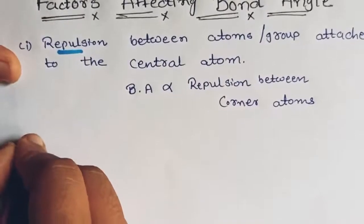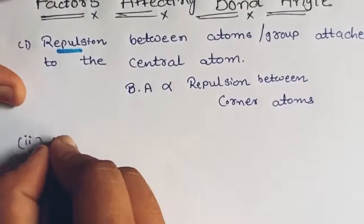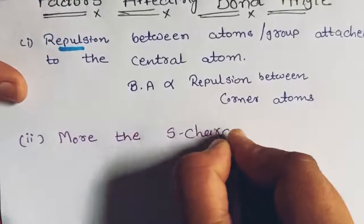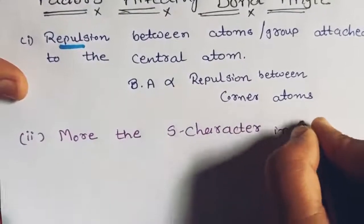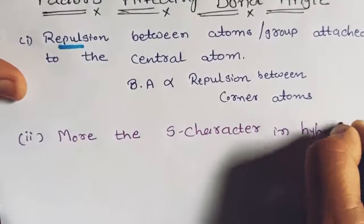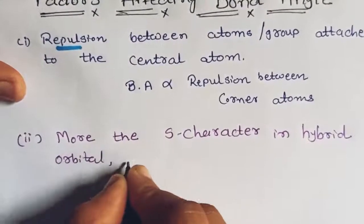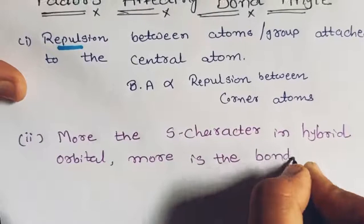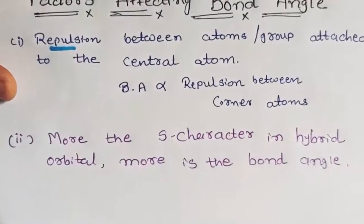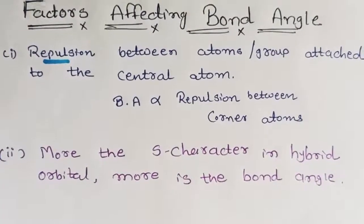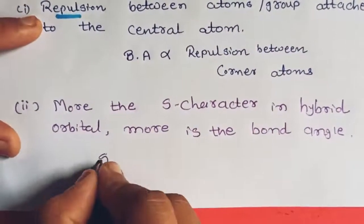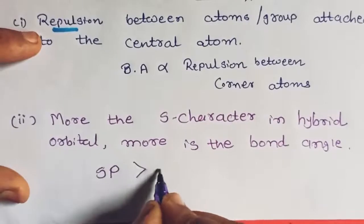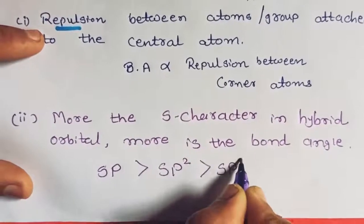The second factor: more the s-character in the hybrid orbital, more is the bond angle. As s-character increases, bond angle also increases. The most s-character is in sp hybridization, so its bond angle is the highest, then sp2, then sp3.